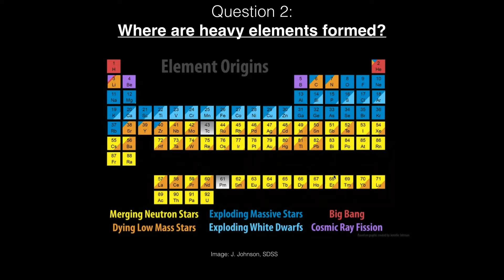We understand mostly the process itself. We know that it has to happen in a very neutron-rich environment so that there are many neutrons to capture. But we are not 100 percent sure where it's happening in the universe. We know these elements exist — we can measure their abundance and relative abundance — but exactly where it's happening is still a bit of an open question.